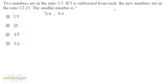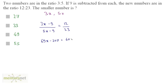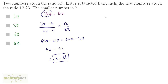9 is subtracted from each and the ratio becomes 12:23. So (3x−9)/(5x−9) = 12/23. Cross-multiplying: 69x − 207 = 60x − 108. So 9x = 99, therefore x = 11. The smaller number is 3x = 3×11 = 33. So option B is the correct answer.